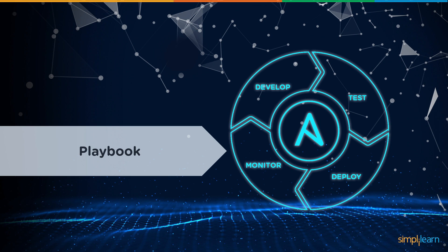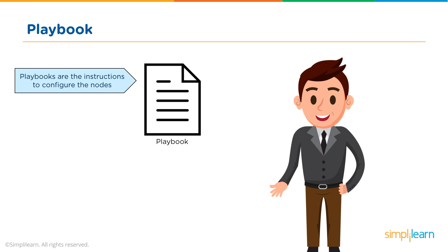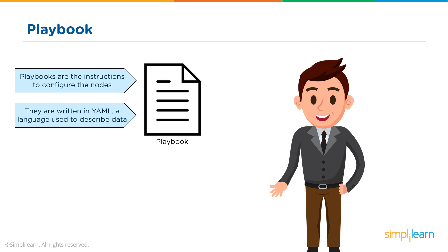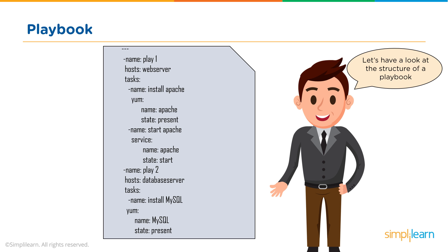Let's take a first look at playbooks you would write for Ansible environments. The core of Ansible is the playbook — this is where you create the instructions that define the architecture of your hardware. The playbook is a set of instructions that configure the different nodes you have, and each of those instructions is written in a language called YAML, a standard language used for configuration of server environments. YAML actually stands for YAML Ain't Markup Language — just a little tidbit!